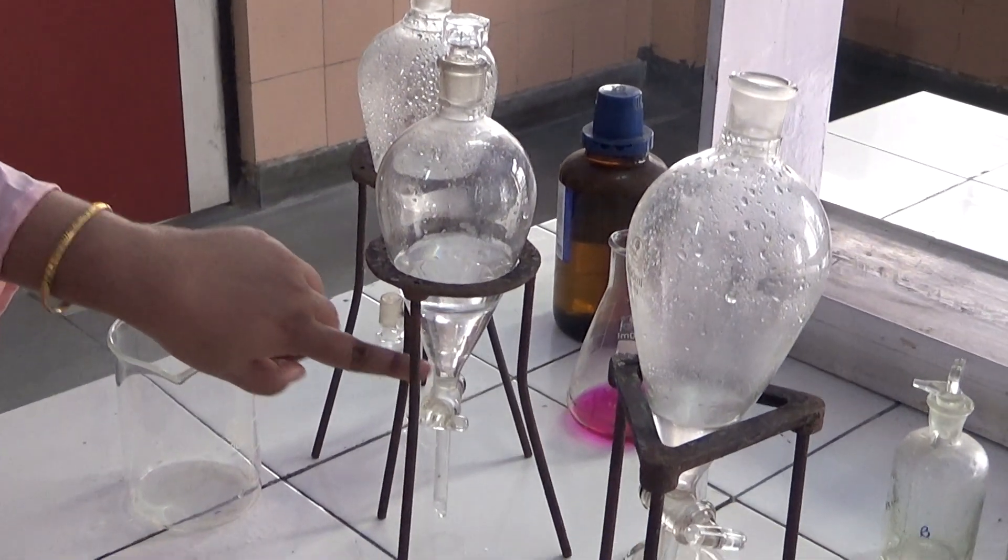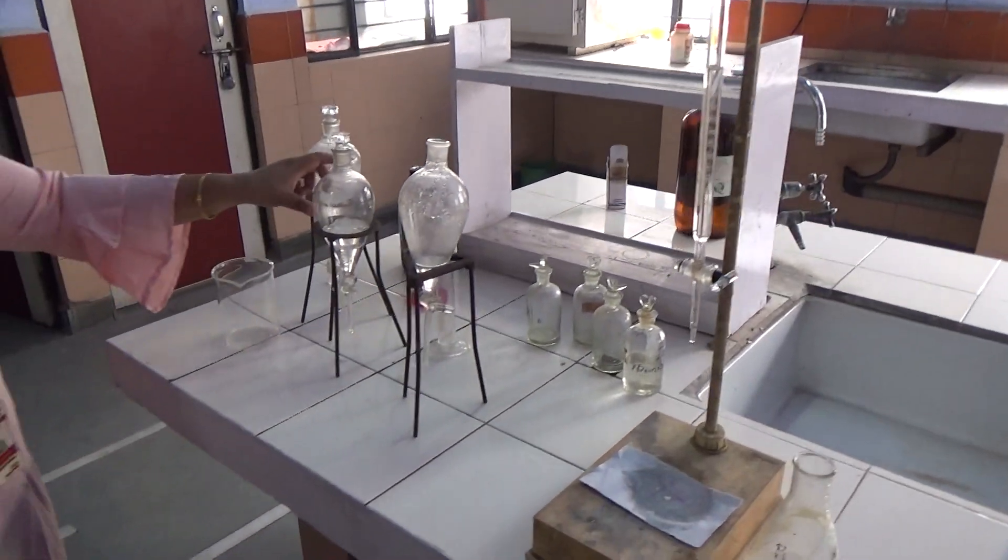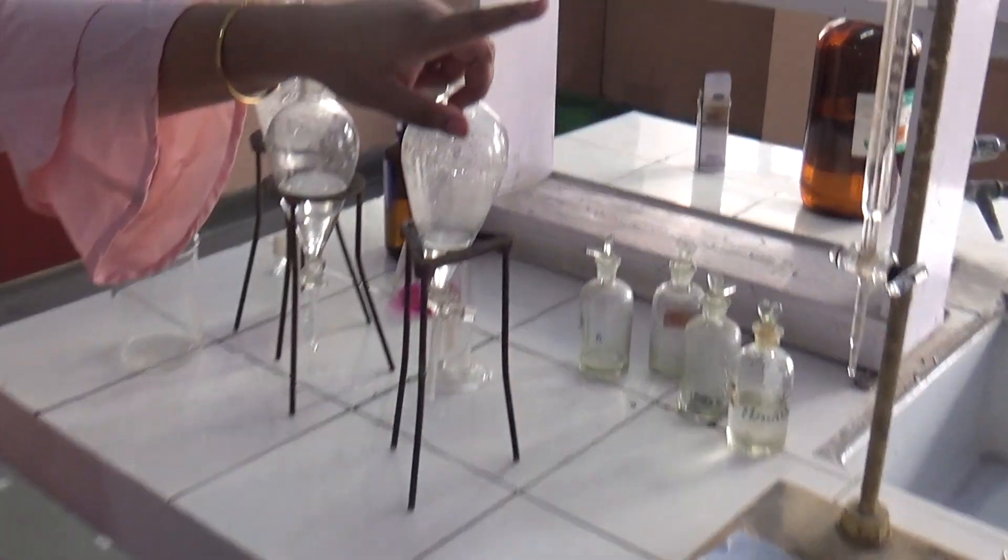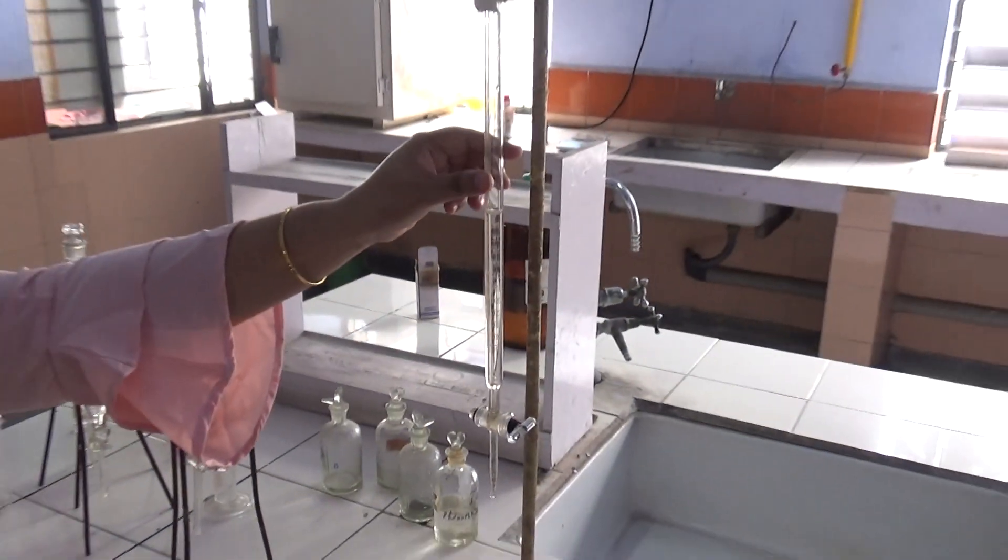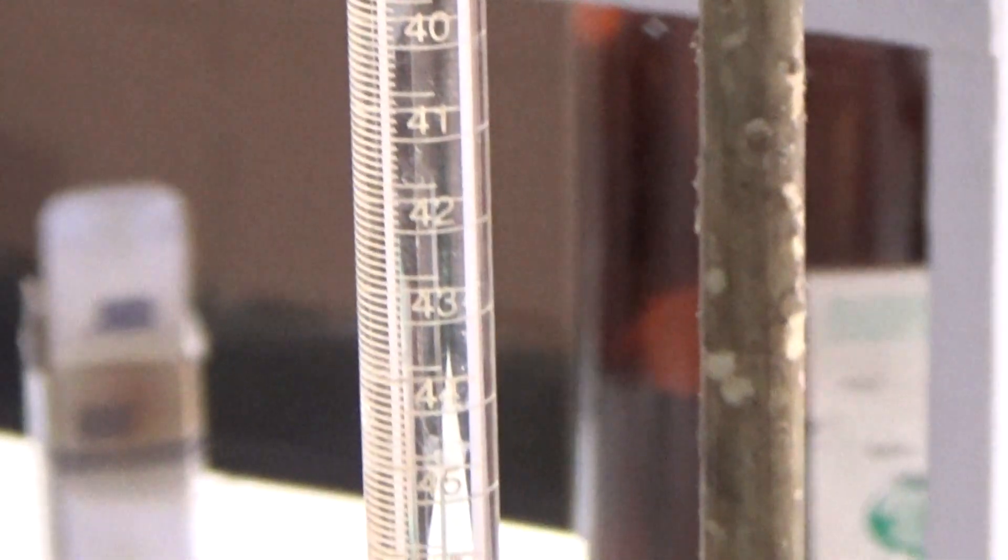By separating your aqueous layer first, we will be doing the titration against 0.1 normal sodium hydroxide, and the organic layer titrating against 0.01 normal sodium hydroxide, for 1.5 grams and 2 grams of benzoic acid.